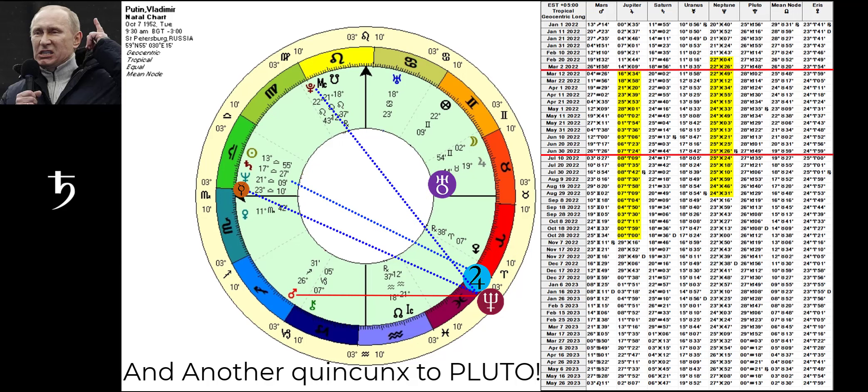And transiting Uranus, moving a lot more slowly, of course, but heading straight to an exact quincunx to his Sun, an aspect that really is already in effect, because it had reached those degrees last year, and now is going through one more time for good measure.